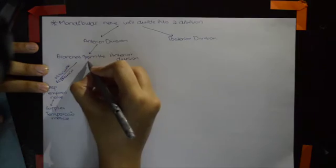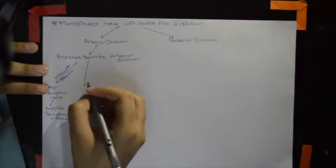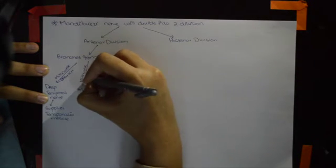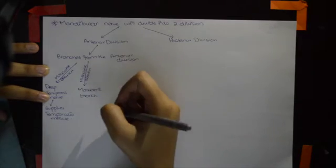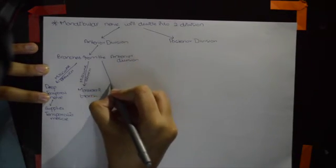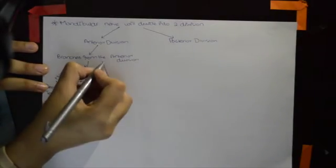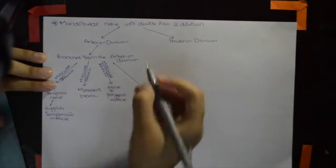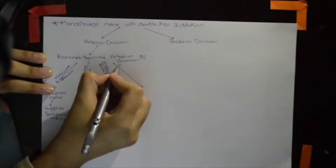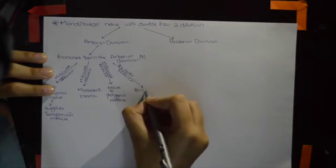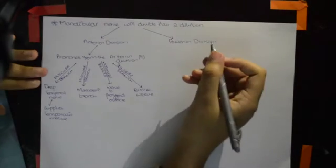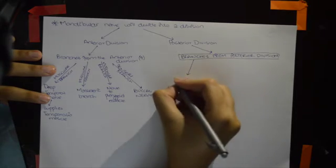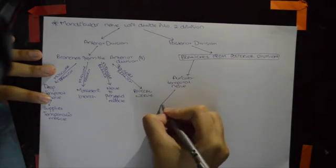The second branch from the anterior division is the masseteric branch, also a muscular branch, which supplies the masseter muscle. The third is the nerve to the pterygoid muscle, also a muscular branch. The fourth and last branch is the sensory branch: the buccal nerve.